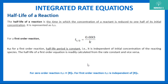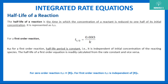For first order reaction, again put R equals R naught by 2 and t equals t half, and you get the half-life expression. Note that half life for first order reaction is actually a constant value — it is independent of the initial concentration of reacting species. So to highlight the difference: for zero order, t half is proportional to R naught and inversely proportional to k; for first order, t half is independent of R naught and inversely proportional to k. You can expect numerical problems based on this.